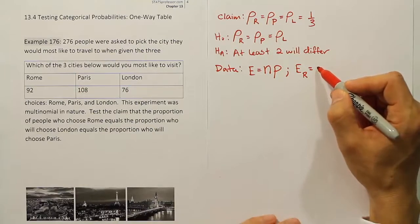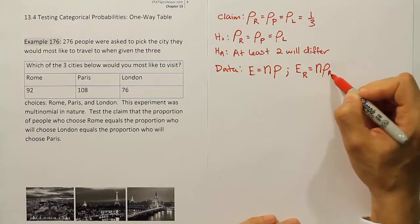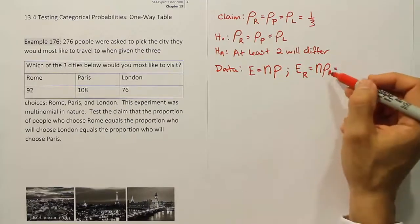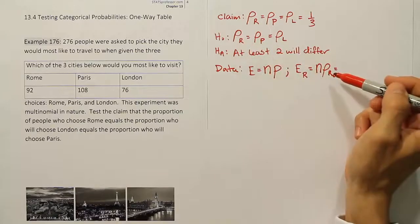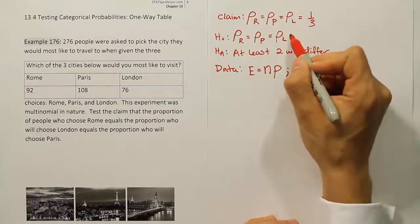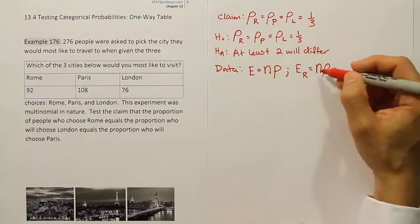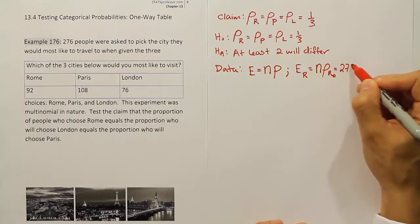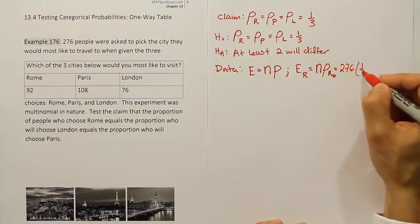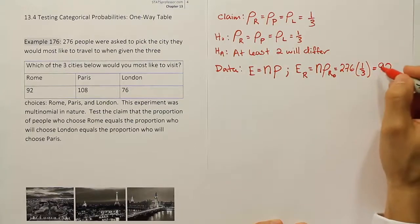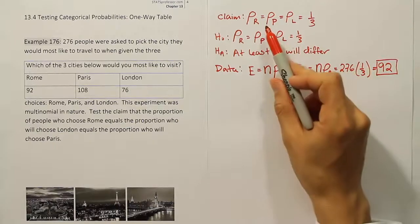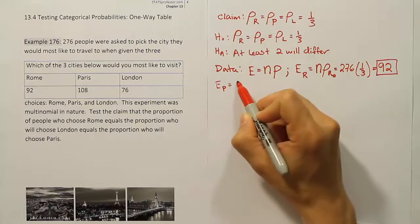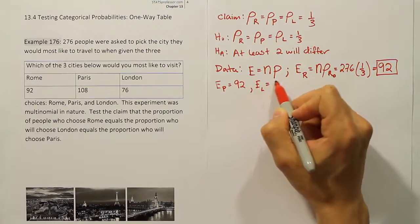We put a subscript 0 on the proportion to remind us it comes from H0 — we assume the null is true. The null says all proportions are 1/3, and n is 276. So the expected value for Rome is 276 times 1/3, which equals 92. Since the proportions are all the same and the sample size is the same, the expected value for Paris is also 92, and the expected value for London is also 92.